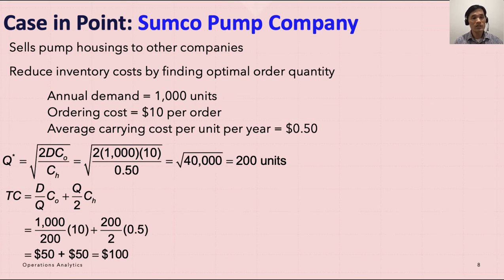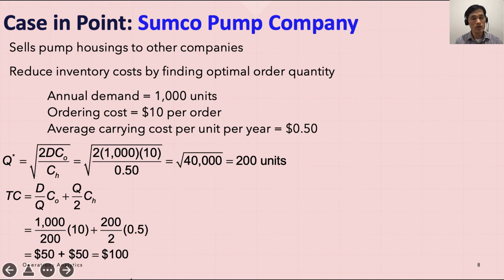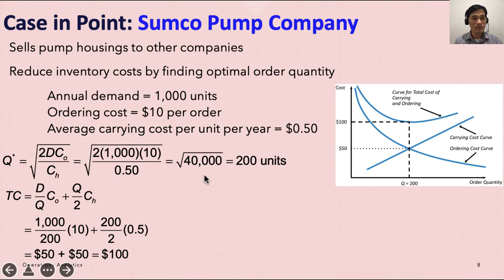Once you find Q* or EOQ, you can find total cost. Plugging 200 in for Q, the total cost is $100. Notably, the carrying costs and ordering costs are equal — each is $50 — because this is the intersection point of the two cost curves, confirming the optimal order quantity.